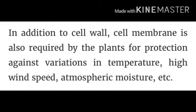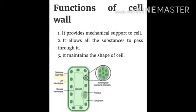In addition to the cell wall, the cell membrane is also required by plants for protection against various temperature variations, high wind speed, and atmospheric moisture. Plant cells and bacteria also have an outer wall surrounding the cell membrane called the cell wall. The cell wall is made up of a stiff material called cellulose, and it provides protection against temperature variation, high speed wind, and atmospheric pressure.